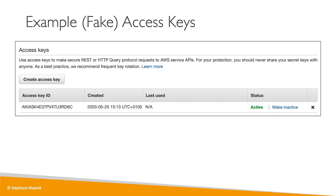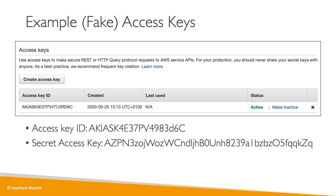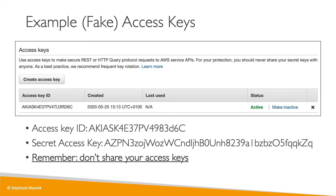When you go into the Management Console, there's a button to create access keys, and it gives you the option to download them right away. Here is a fake access key ID and a fake secret access key. When loaded into the command line interface, these would allow you to access the AWS API. We'll do this in the hands-on in a second. Remember, do not share your access keys — they are private to you.